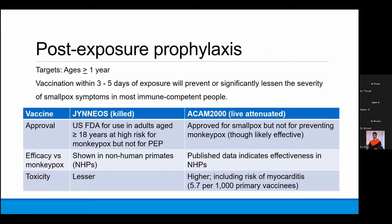There are two vaccines: the JYNNEOS vaccine, which is a killed vaccine, and the ACAM2000 vaccine, which is a live attenuated vaccine. In the US, these are approved for adults older than 18 years at high risk for monkeypox — but only as post-exposure prophylaxis, not pre-exposure. Their efficacy against monkeypox has been shown in non-human primates but not in human beings. The JYNNEOS vaccine has fewer adverse reactions compared to ACAM2000, which can have higher rates of side effects, including a higher risk of myocarditis.